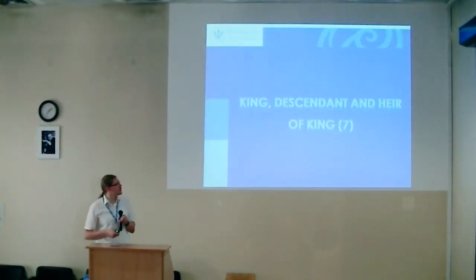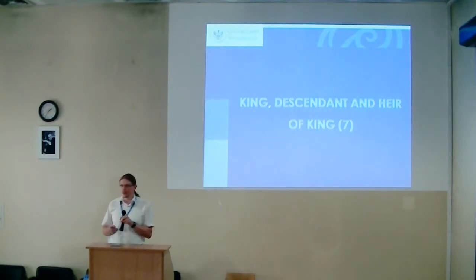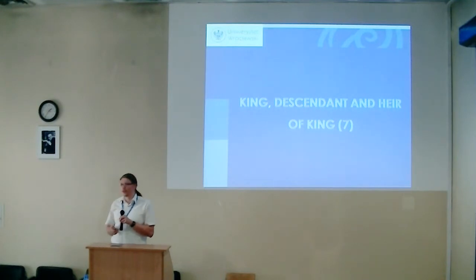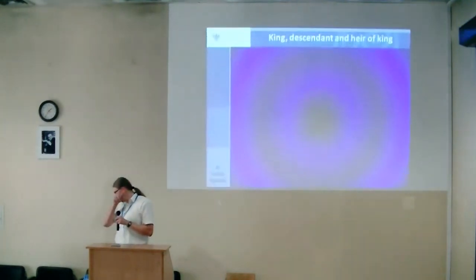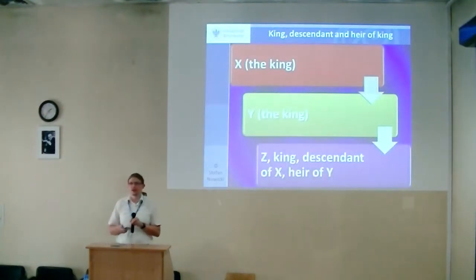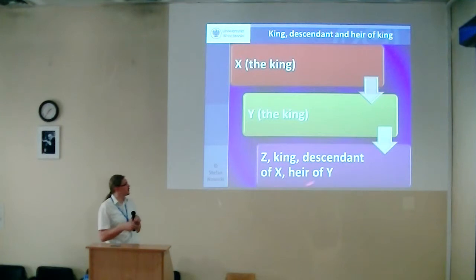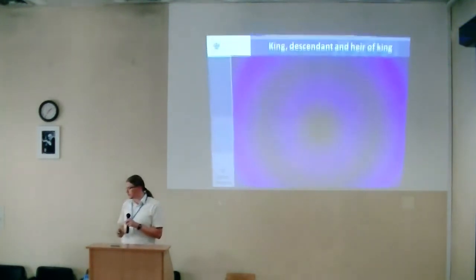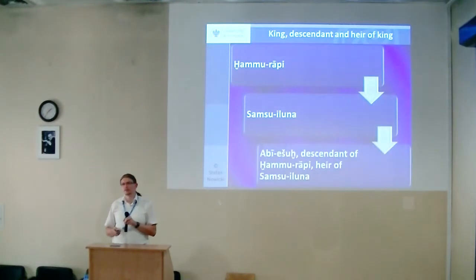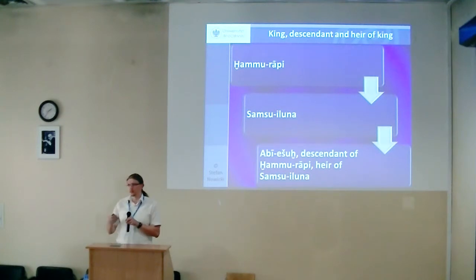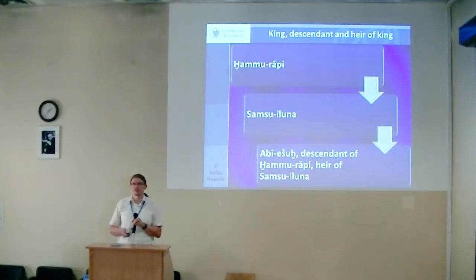We also have the title 'king who was descendant and heir of king,' with only seven cases, mostly from the Old Babylonian period. The model is: king X, then king Y, and Z — a king who is descendant of X his grandfather and heir of Y his father. For example: Hammurabi, the best-known king of Babylon; then Samsu-iluna his son; and then Abi-eshu, descendant of Hammurabi and heir of Samsu-iluna.